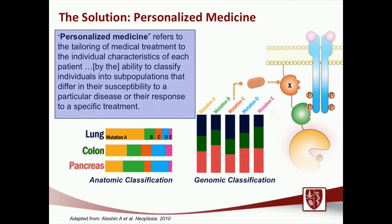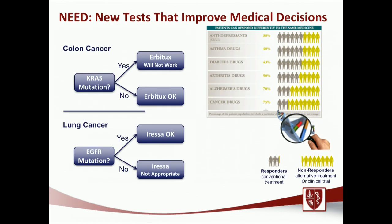The solution is personalized medicine — now more frequently called precision medicine. Personalized medicine refers to tailoring a medical treatment to an individual and, more importantly, to the individual's particular tumor. We've been seeing a shift from an anatomic classification of cancer to a genomic classification. While in the past we would say you have a cancer of the lung, the colon, the kidney, now frequently we're saying you have a cancer with this mutation — it doesn't matter where it initially started. In colon cancer, we test for a KRAS mutation; if absent, Erbitux is very likely to work. In lung cancer, if an EGFR mutation is present, that patient is spared chemotherapy and goes on a pill called Iressa.